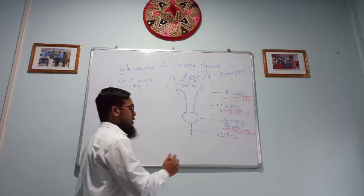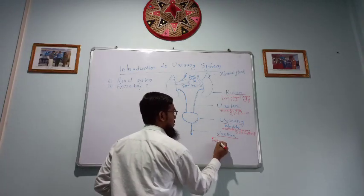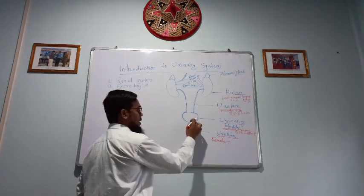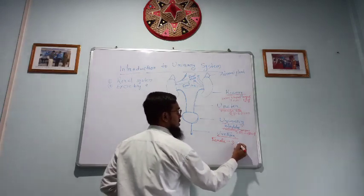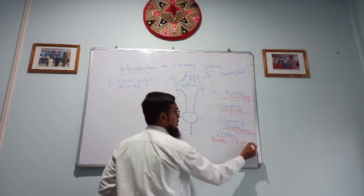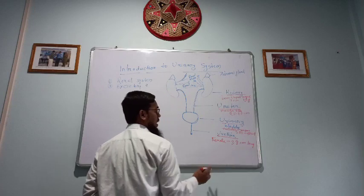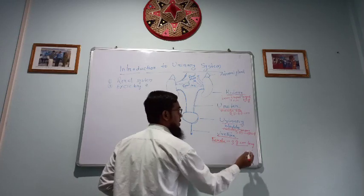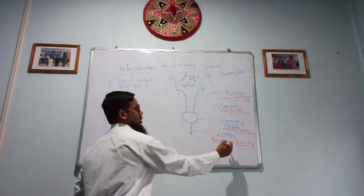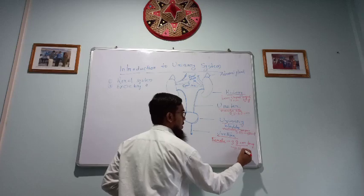They are called urethra. So in case of female, the urethra is about 3.8 cm long and that urethra's main function is only urination.